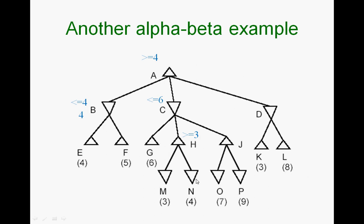It finds N is 4, so you're taking max of 3 and 4. At this point H's value is 4—it says greater than or equal to 4. Then it finds there are no children, and as soon as there are no children, the current bound becomes the real value. So H is 4. The moment H is 4, C can take the minimum of 6 and 4 as its current bound.